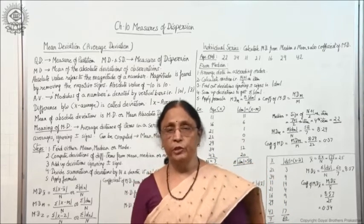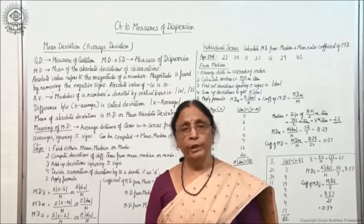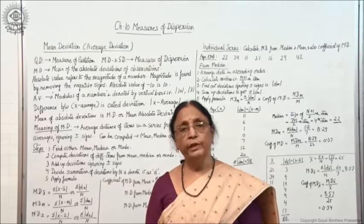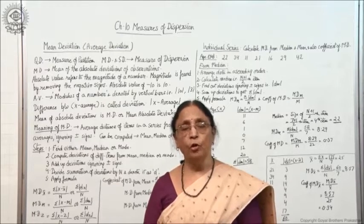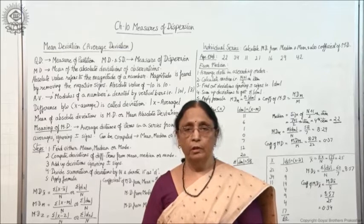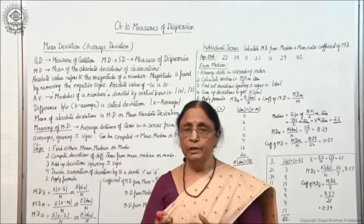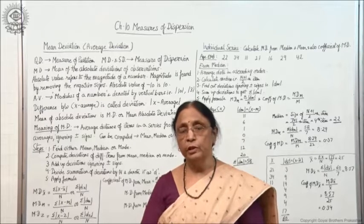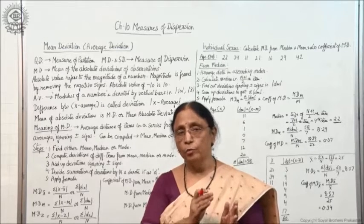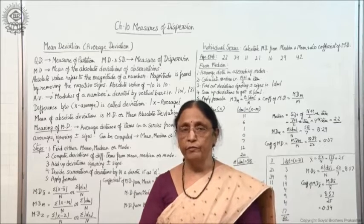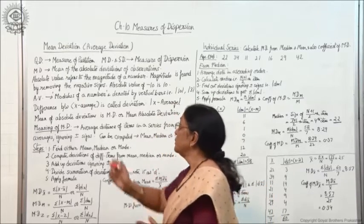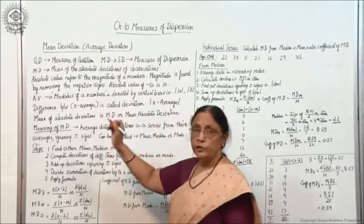What is mean deviation? Mean is the average of a series, and mean deviation is the deviation from the average — how much far a value is from the average. That is called mean deviation. This is also known as average deviation.